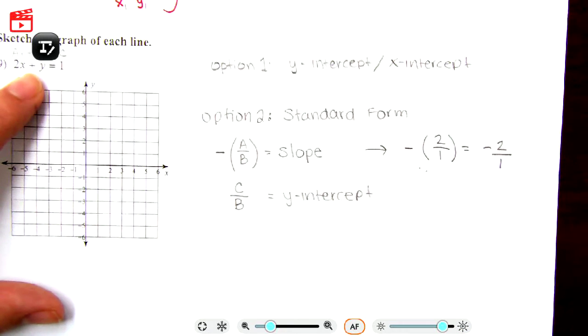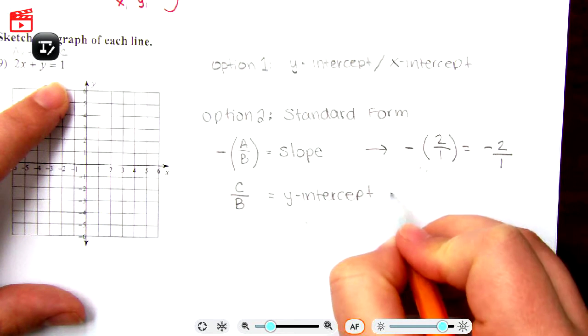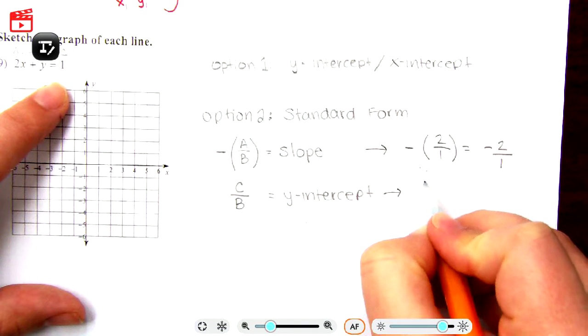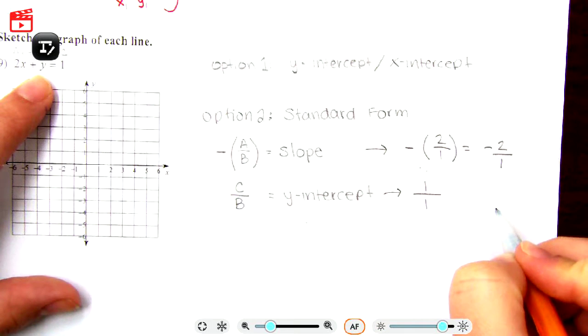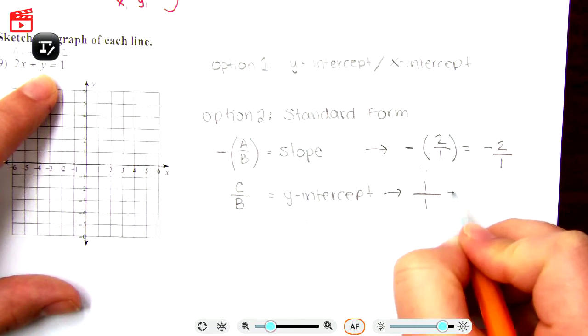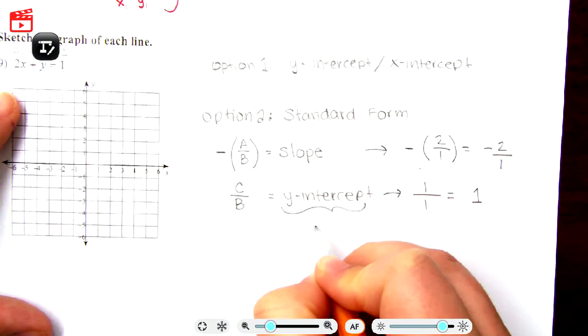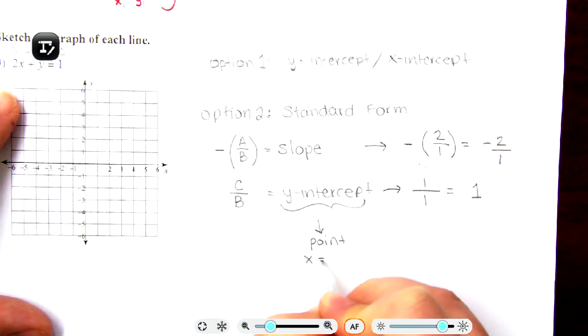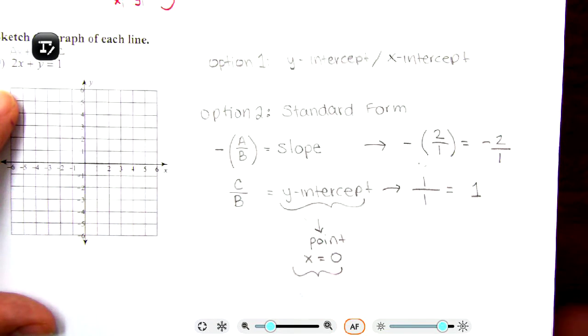The y-intercept is we take c over b, which is 1 divided by 1, which is just 1. Now again, what does it mean to be a y-intercept? That is a point where x is equal to 0. So this y-intercept looks like 0 comma 1. So 0 comma 1 is our y-intercept. So here it is, we have c over b.